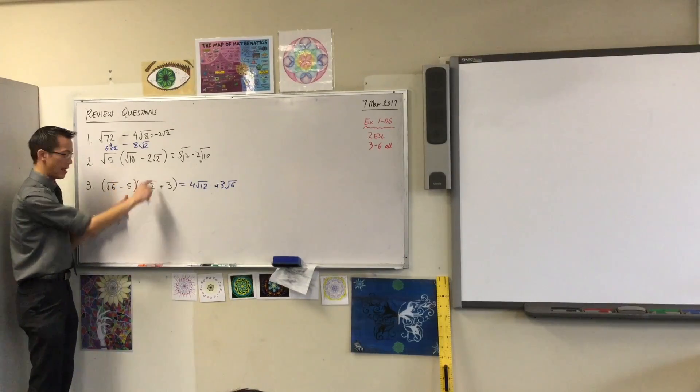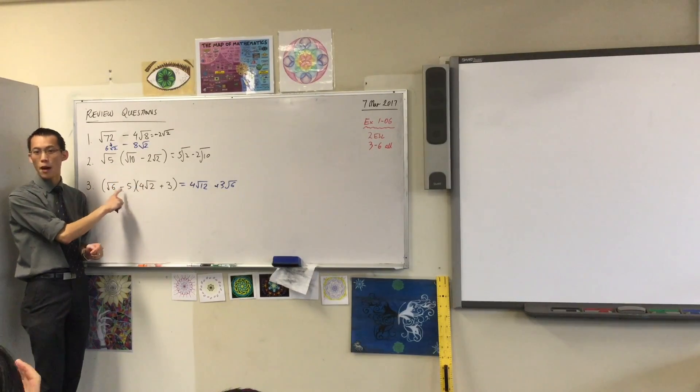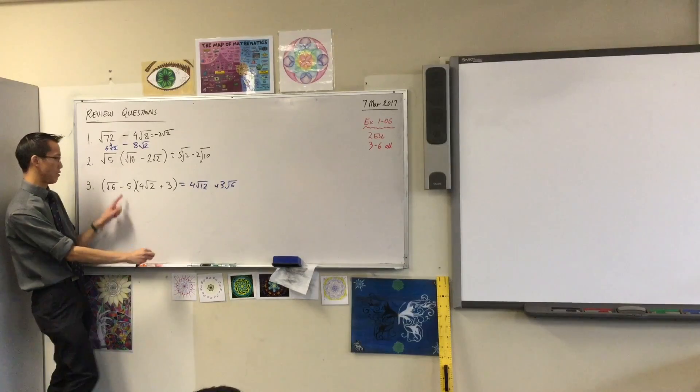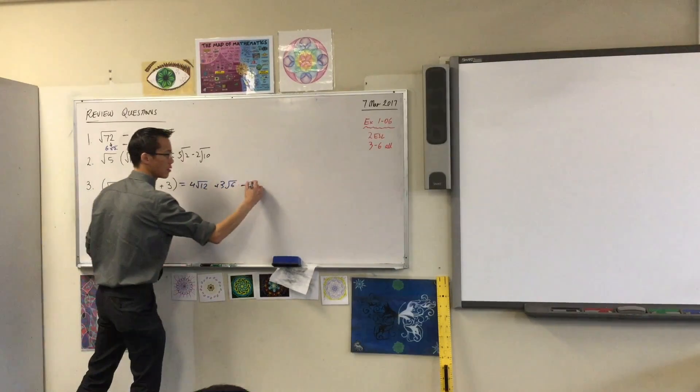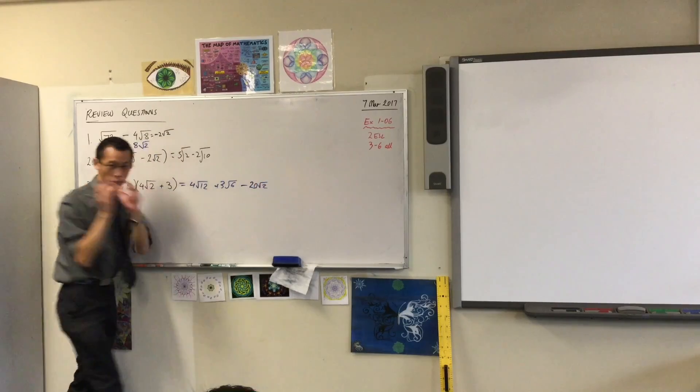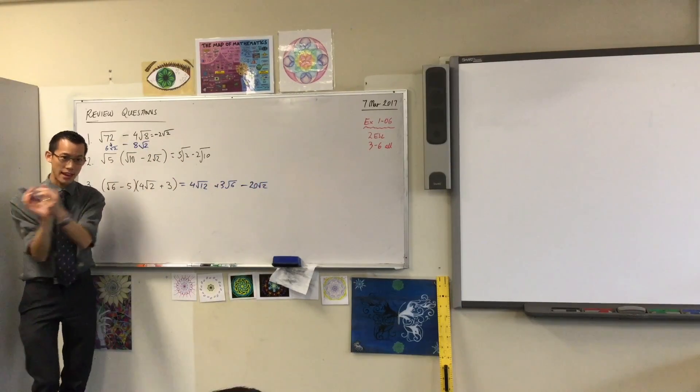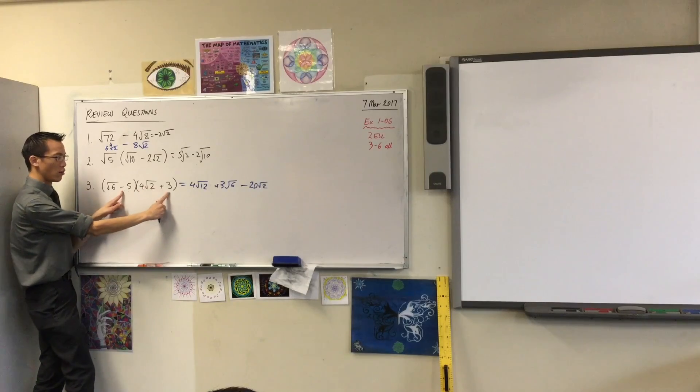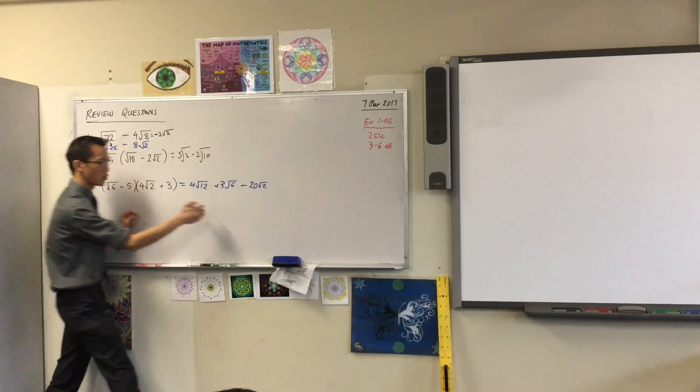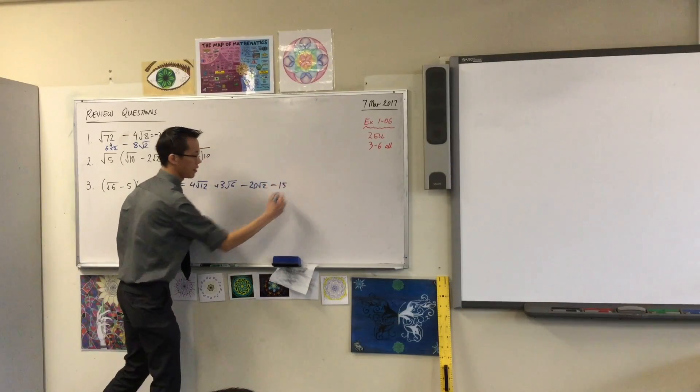And then I'm going to do the second pair now. Don't forget both of them have a minus 5 attached to them, so this will become minus what? 20 root 2. We remember that our whole numbers out the front we deal with, and then our surds we deal with separately, so that gives you the 20. What about here in the end? 15. Minus 15.